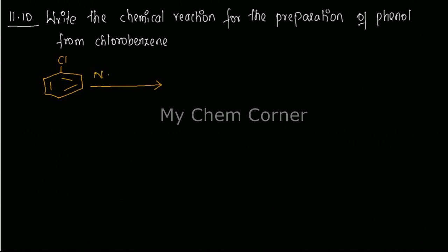this with NaOH at a particular temperature of 623 Kelvin and 300 atmospheric pressure. Now in this case, what will happen is the Cl will completely get displaced and it will be occupied by